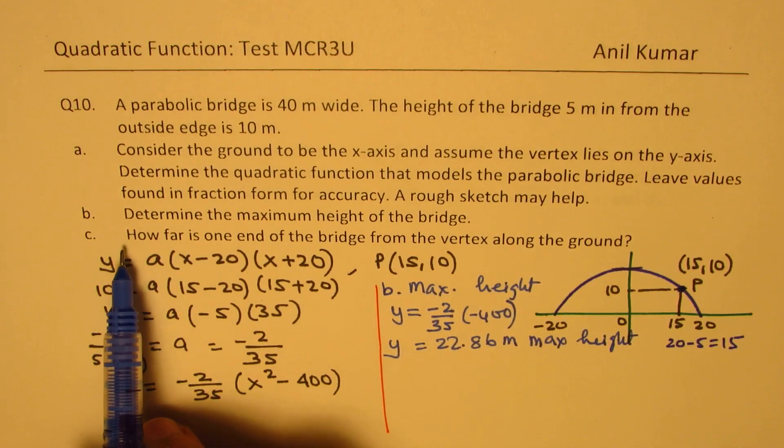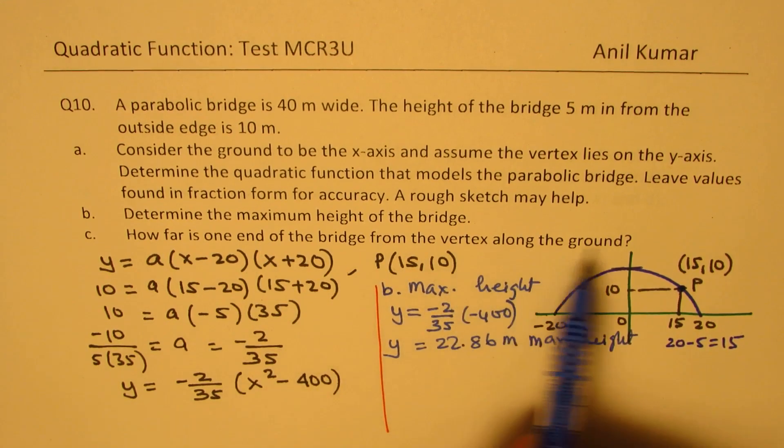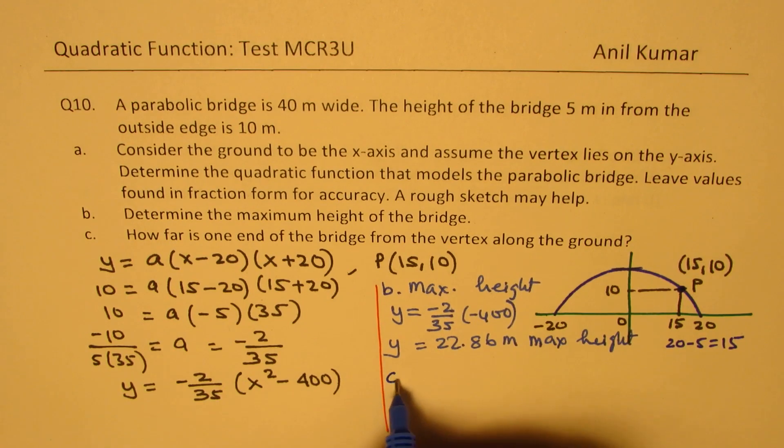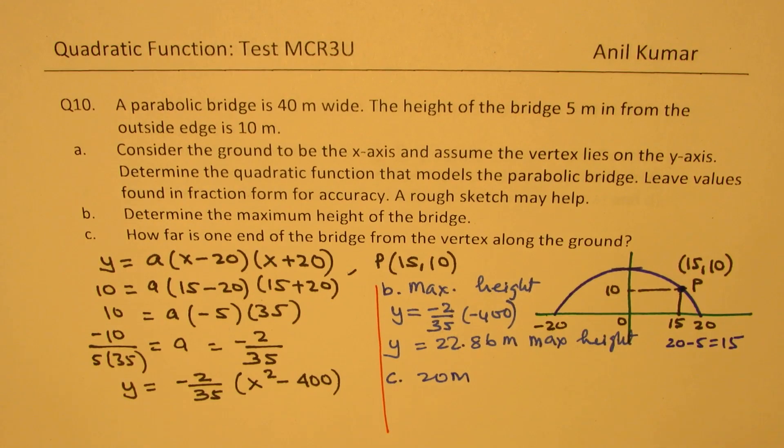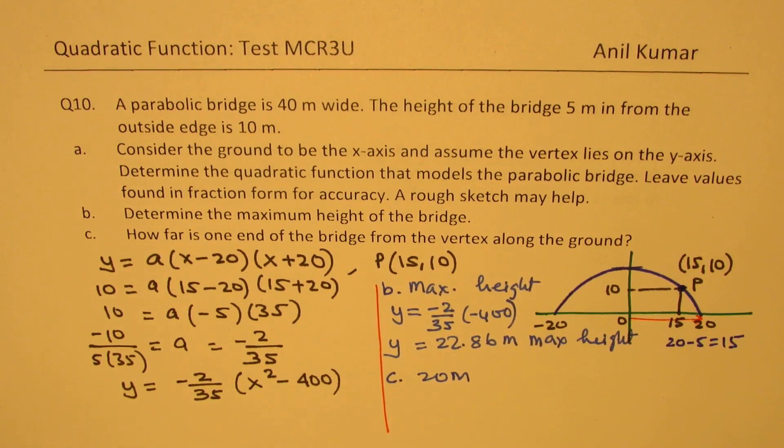Okay. D. How far is one end of the bridge from the vertex along the ground? That means only this length. So it is c is 20 meters. Right? So they are only asking you this distance. How far from the vertex? So along the ground, it is 20 meters. Perfect.